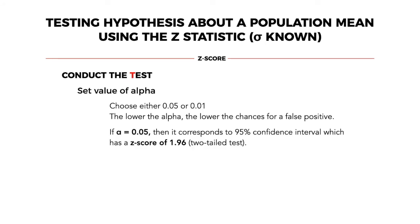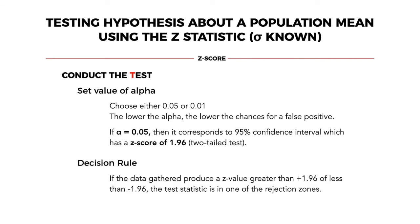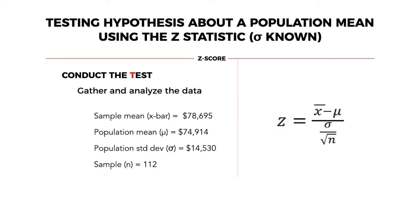The second step is to conduct the test. Before anything else, we need to set the value of alpha. There are different values of alpha to choose from: 0.001, 0.01, 0.05, 0.1, or 0.5, etc. Remember that the lower the alpha, the lower the chances of a false positive. The decision rule that will guide us is that if the data gathered produce a Z value greater than positive 1.96 or less than negative 1.96, the test statistic is in one of the rejection zones. Now let's move on to gathering and analyzing the data.